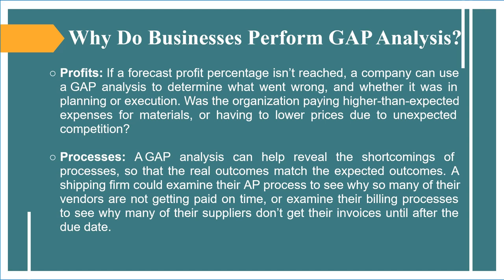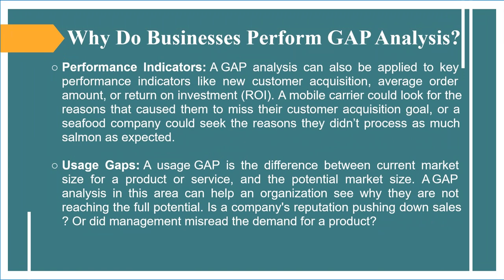Processes — a gap analysis can reveal shortcomings of processes so that real outcomes match expected outcomes. A shipping firm could examine their accounts payable process to see why vendors are not getting paid on time, or examine billing processes to see why invoices arrive after the due date. Performance indicators — a gap analysis can be applied to key performance indicators like new customer acquisition, average order amount, or return on investment (ROI). Usage gaps — a usage gap is the difference between current market size for a product or service and the potential market size. A gap analysis can help an organization see why they are not reaching full potential, such as whether a company's reputation is pushing down sales or whether management misread demand.